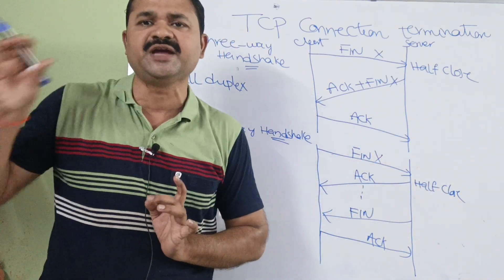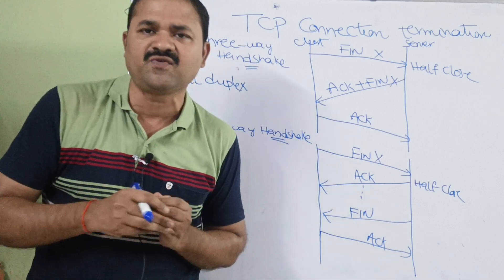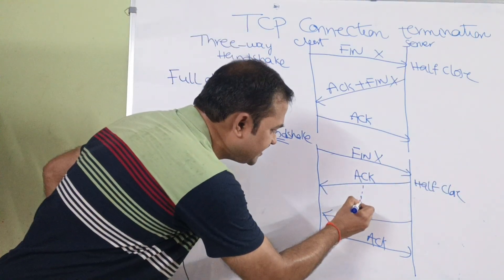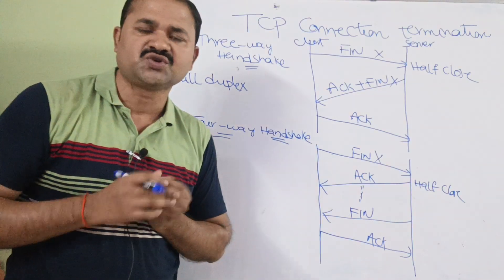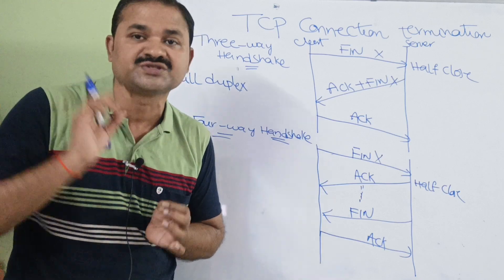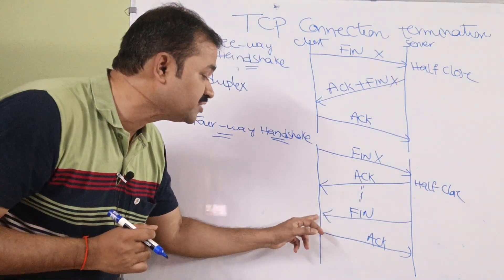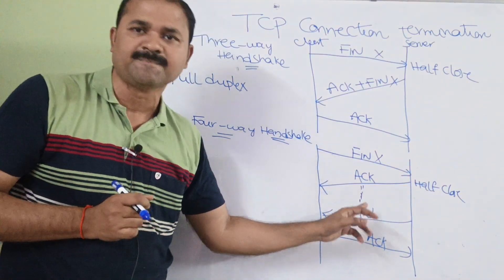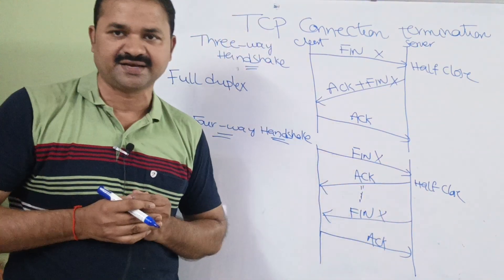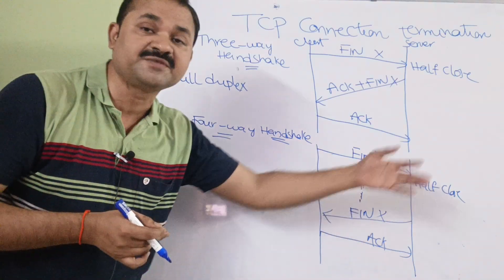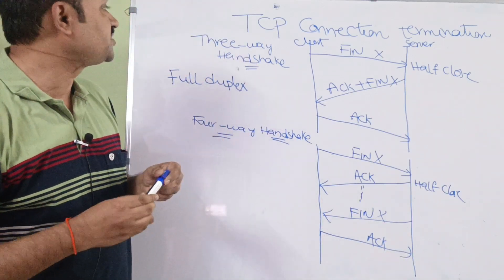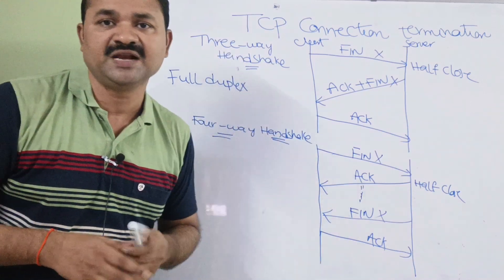However, the server has some data to send or needs to perform some operations on its data, so it performs those operations. Once all those operations are complete and the server has no data to send, it sends a FIN segment to the client, specifying that the connection from server to client will be terminated. Once the client receives the FIN segment from the server, it responds with an acknowledgement segment. In this way, the TCP connection is terminated using these two approaches.